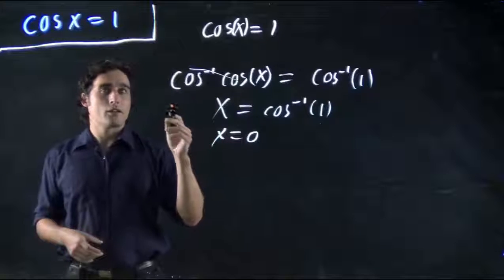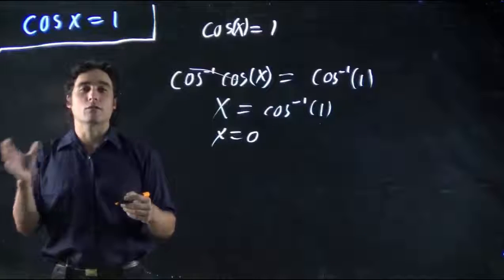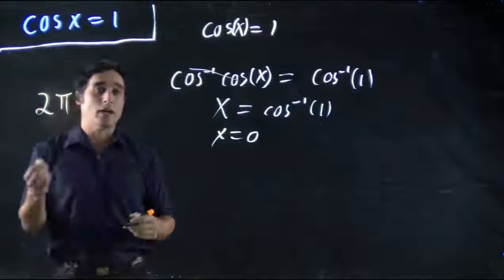Well, the normal cos function, the period, how long between repeats, is 2 pi. 2 pi.